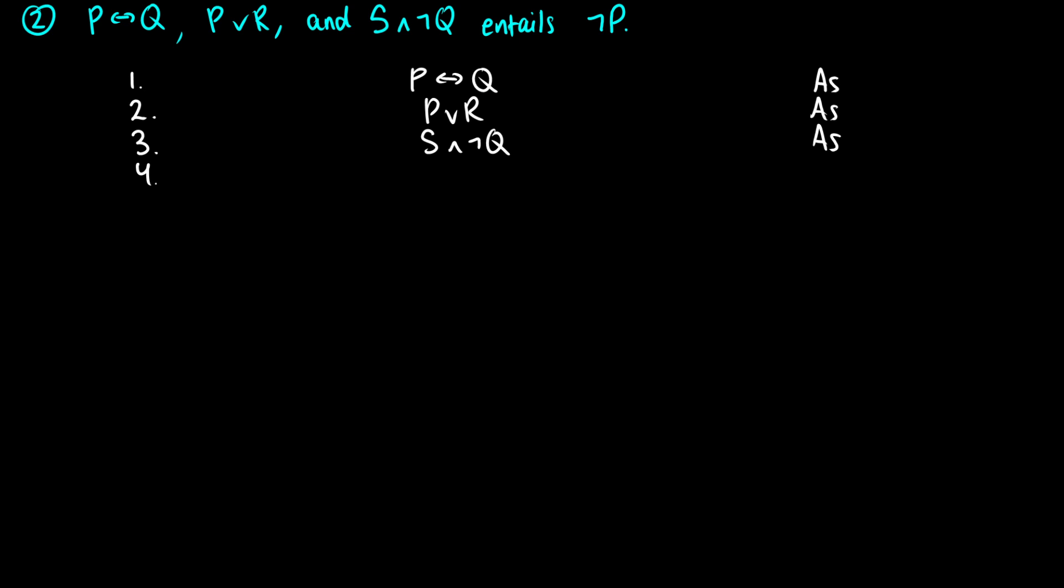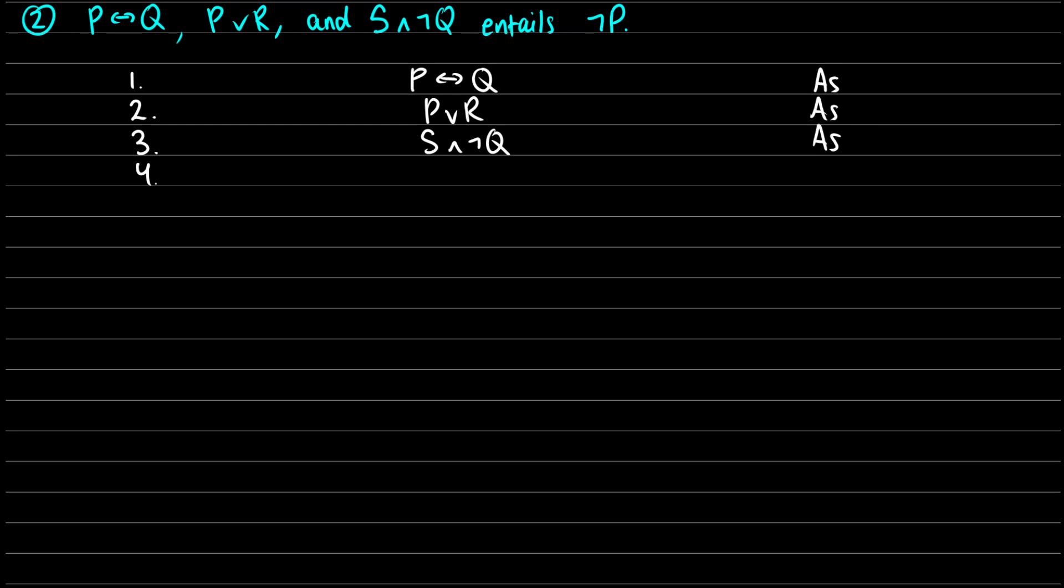So we'll do one more. P↔Q, P∨R, and S∧¬Q entails ¬P. So remember, I've written out our three assumptions here, and we have to say entails ¬P. So we take the negation of that, ¬¬P. That's our fourth assumption. So the first thing I'm going to do is I'm just going to take ¬¬P, and I'm going to reduce it to P using double negation on four. Since two nots, we can't really do anything with that. Just get rid of them. Okay, I'm going to now deal with ∧ decomposition, just so that way we don't have to do branching paths.